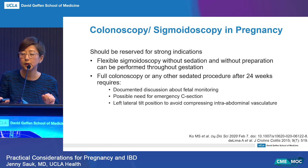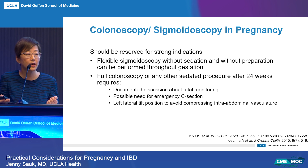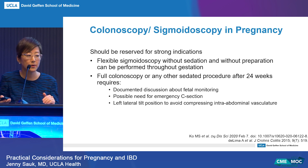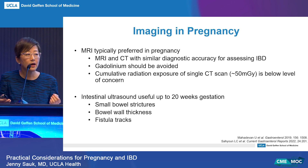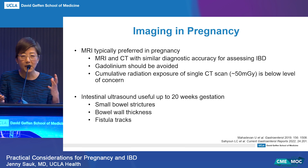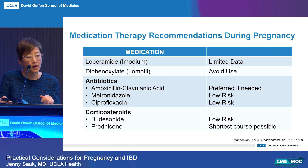Regarding endoscopy in pregnancy: sigmoidoscopy can be considered without sedation and without preparation throughout gestation. Full colonoscopy is more complex, especially after 24 weeks — you should have a documented discussion about fetal monitoring and possible need for emergency C-section, and the patient should be in the left lateral tilt position to avoid compression of intra-abdominal vasculature. For imaging, MRI is typically preferred in pregnancy without gadolinium. If a CT scan is needed, cumulative radiation exposure from a single CT is still below the level of concern. Intestinal ultrasound is also an excellent option up to 20 weeks to evaluate for small bowel stricturing, bowel wall thickness, and fistula tracts.